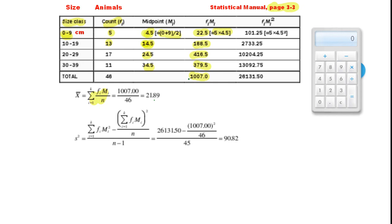All we need to do is to take that number down to this formula here on top. Underneath we put the total number of observations, which is 46. 1,007 divided by 46, the mean is 21.89.